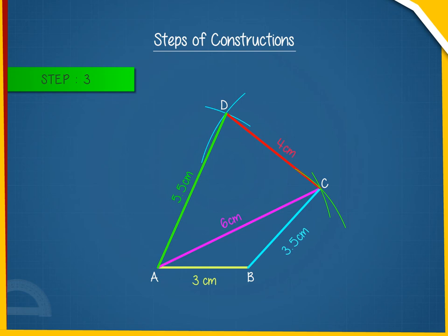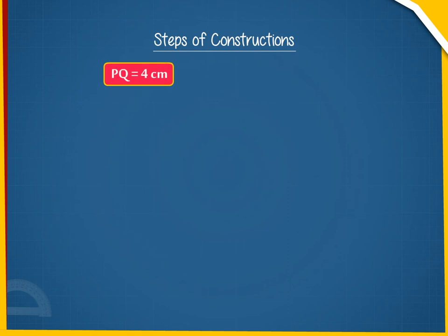Now, let us construct a parallelogram PQRS with PQ equals to 4 cm, QR equals to 3.5 cm and angle Q equals to 80 degrees.